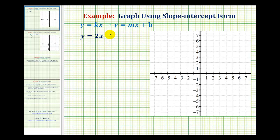But for direct variation, b or the y intercept would be zero. And the slope of the line m would be the same as k or the constant of variation.